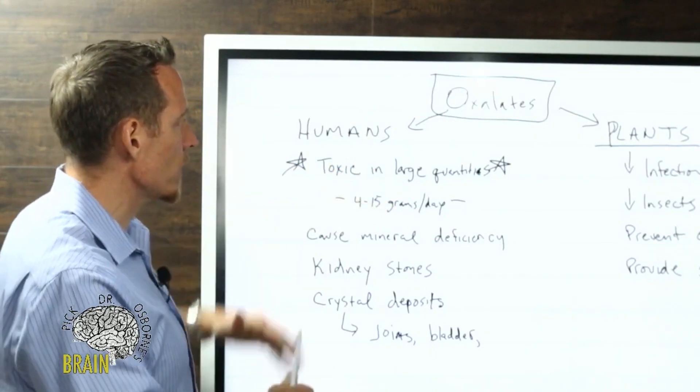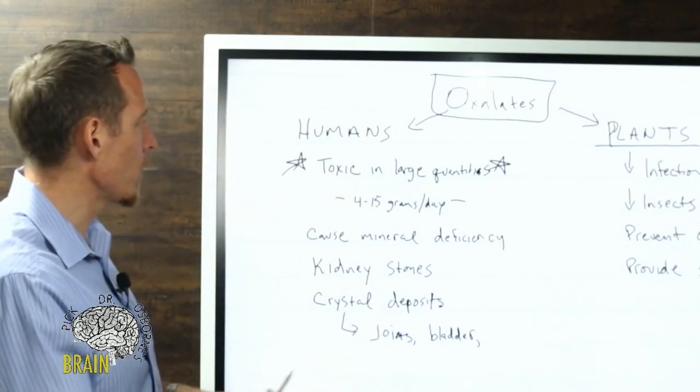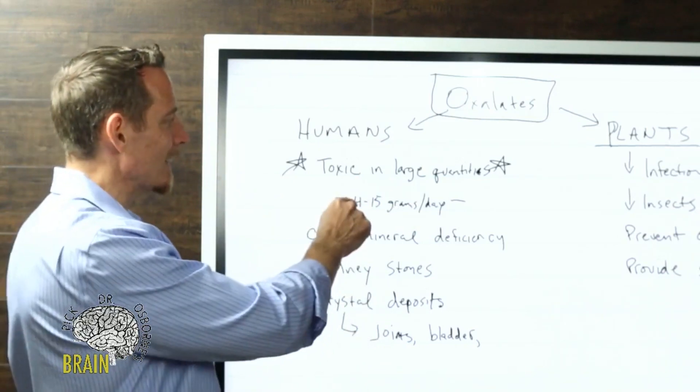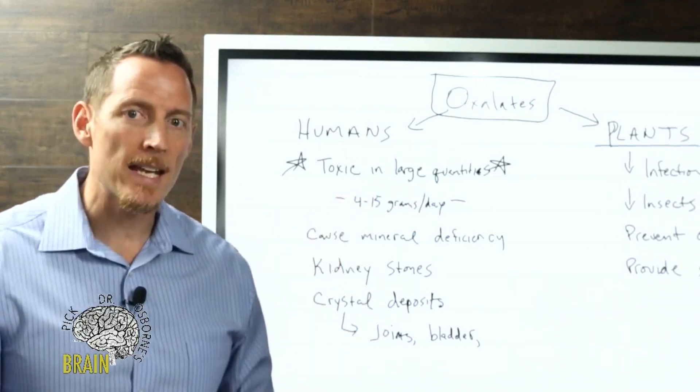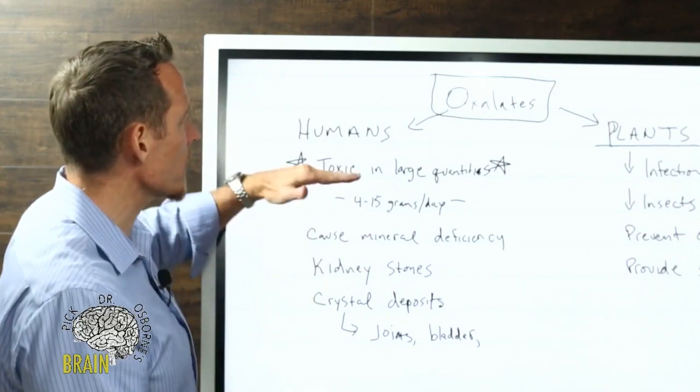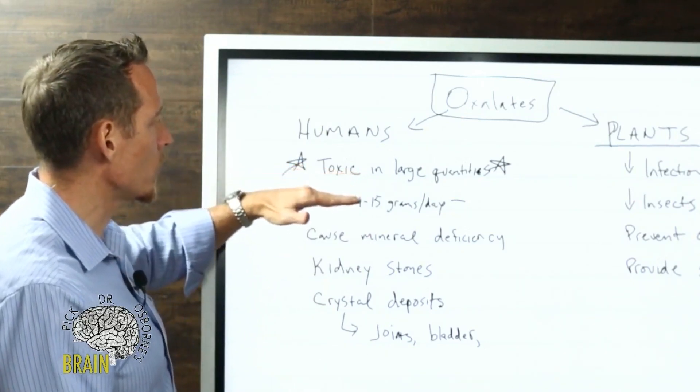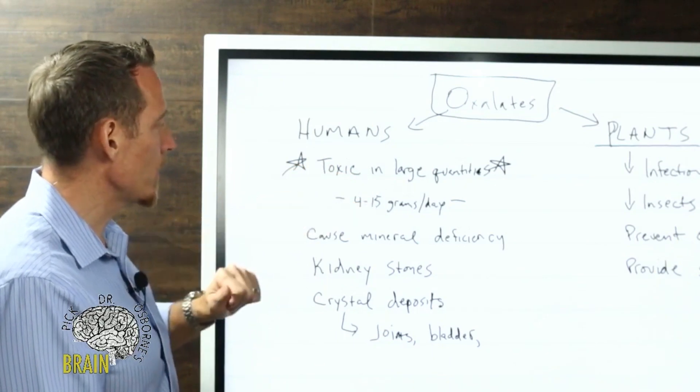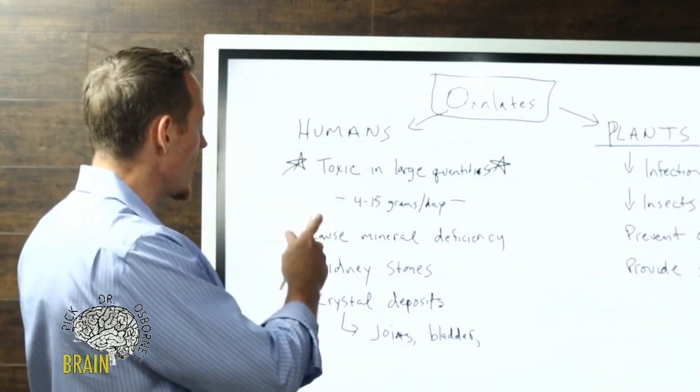Some people are more sensitive to oxalate than others. Medical research shows as little as 4 grams a day can actually be toxic and kill somebody. We're not just talking about toxicity, but the potential for an oxalate to be able to kill you. Oxalates in humans can cause mineral deficiencies.